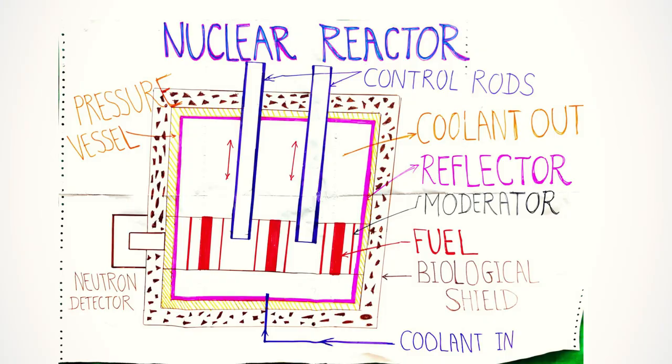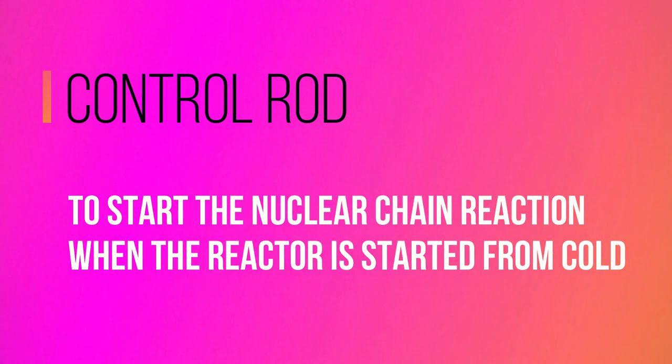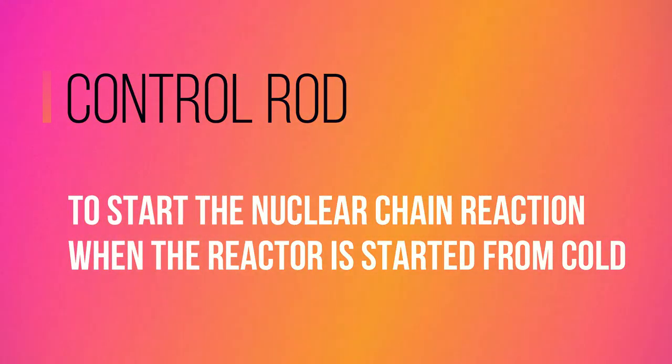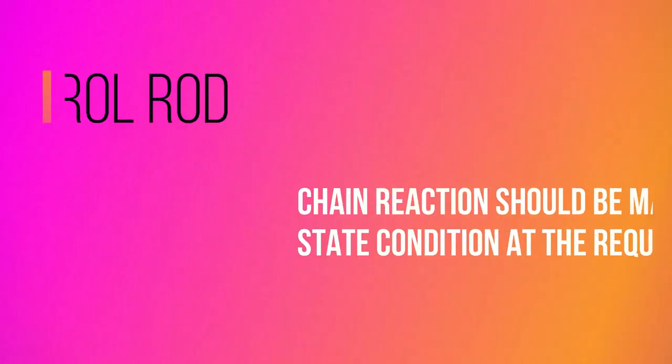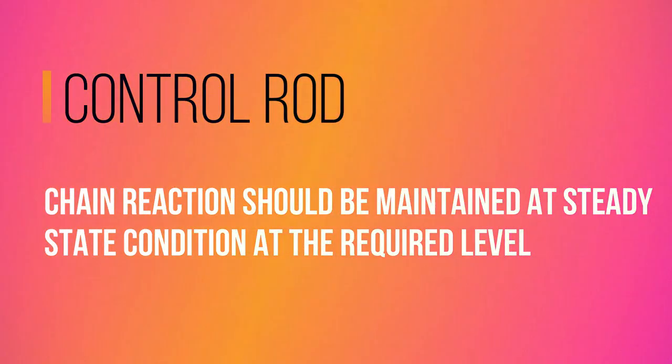The next one is control rod. Some controls are necessary in nuclear reactors to start the nuclear chain reaction when the reactor is started from cold. The chain reaction should be maintained at steady state condition at the required level.